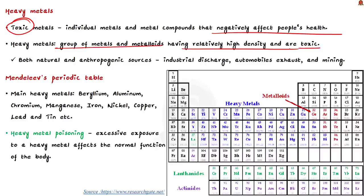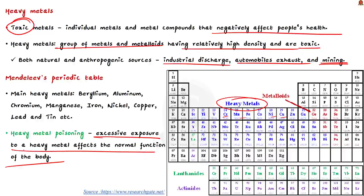Heavy metals are a group of metals and metalloids that have relatively high density and are almost toxic. These metals are released into the environment by both natural and anthropogenic sources such as industrial discharge, automobile exhaust and mining. If you consider the Mendeleev's periodic table, it organizes chemical elements according to their atomic number, electron configuration and valence numbers. You can see here these blue ones are the heavy metals. The main heavy metals are beryllium, aluminium, chromium, manganese, iron, nickel, copper, lead and tin etc. Often we hear the term heavy metal poisoning. It refers to the scenario when excessive exposure to heavy metal affects normal functioning of the body.